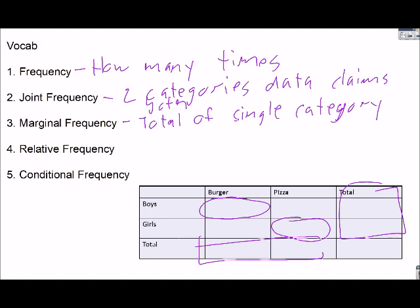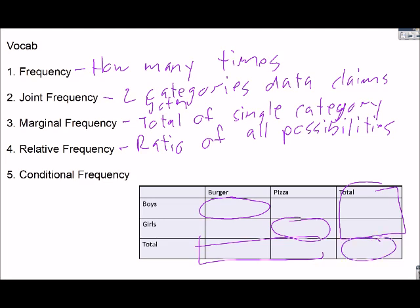Relative frequency is what is the ratio of all possibilities. So I have to add up both boys and girls here. And then I say okay, there's a person who is a boy who likes burgers. What's the likelihood I pick them out of everyone?